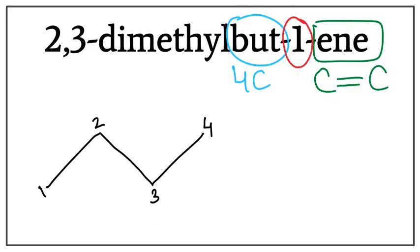This 1 between the bute and ene tells us the location of this double bond, which is 1, meaning that the double bond is between the first and the second carbon. So let's draw the double bond between the first and the second carbon.